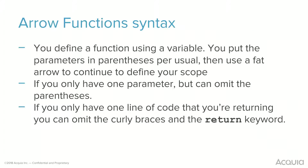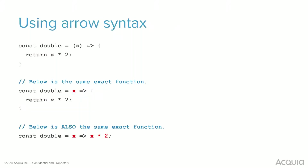Quick syntax notes: you define a function using a variable, put the parameters in parentheses as usual, then use a fat arrow to define your scope. If you only have one parameter, you can omit the parentheses. And if you're only returning one line of code, you can omit the curly braces and the return keyword. Essentially, the same function can be written in three progressively shorter ways: full form, no parentheses, or all in one line.